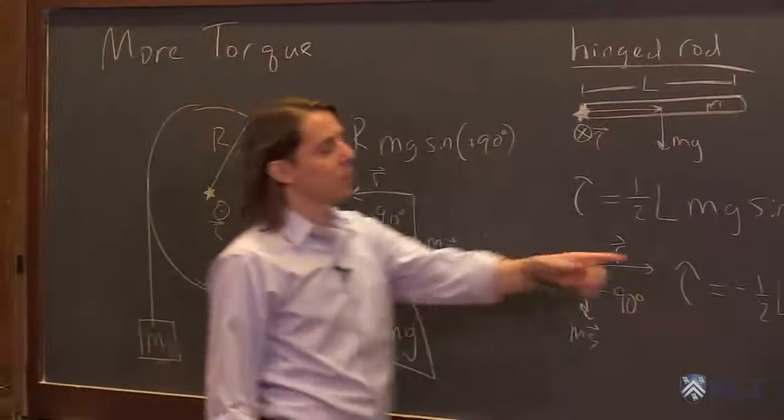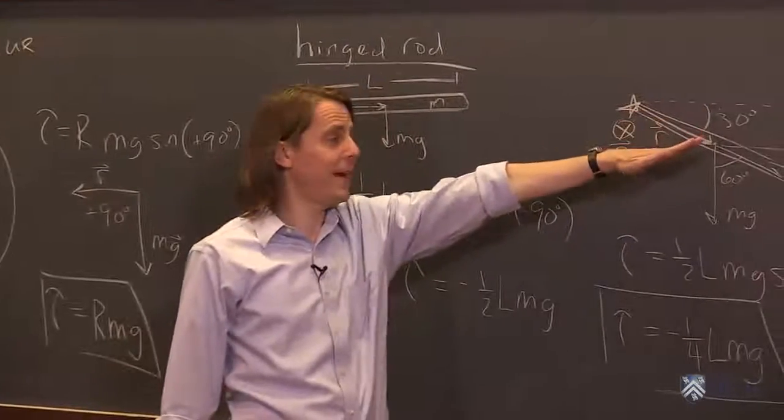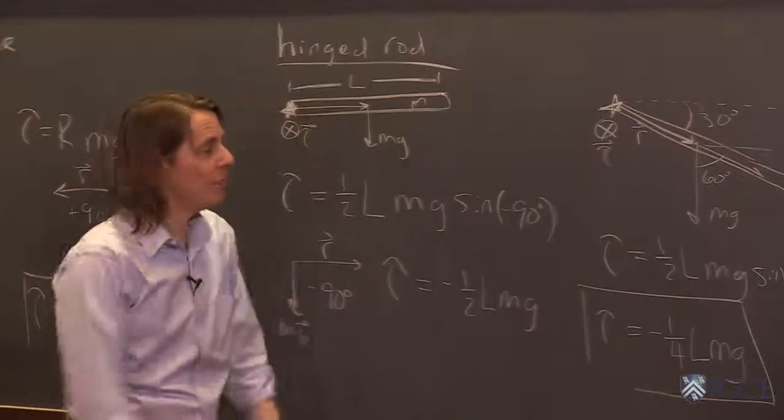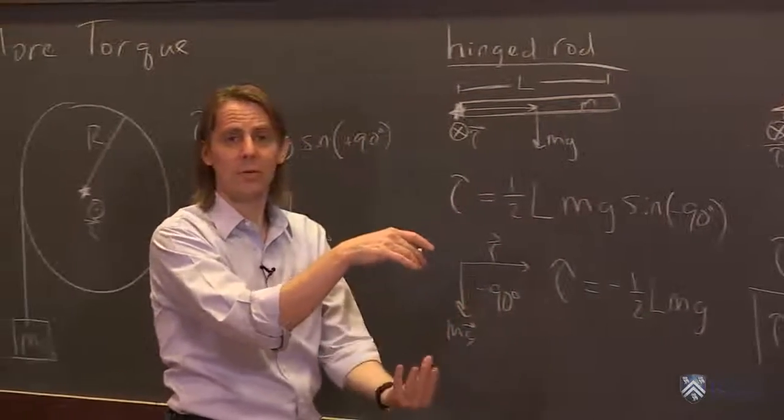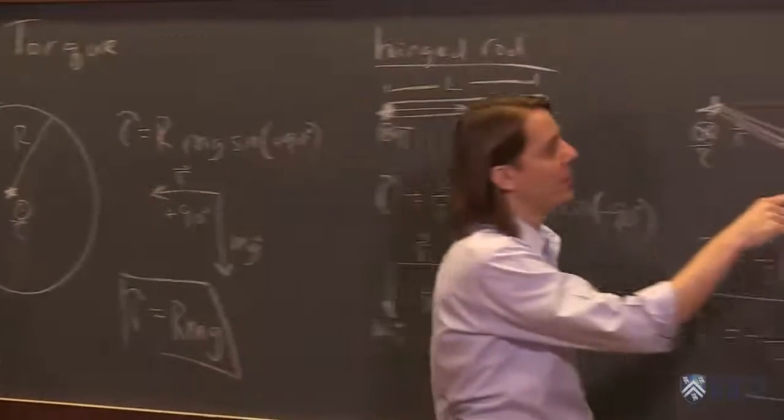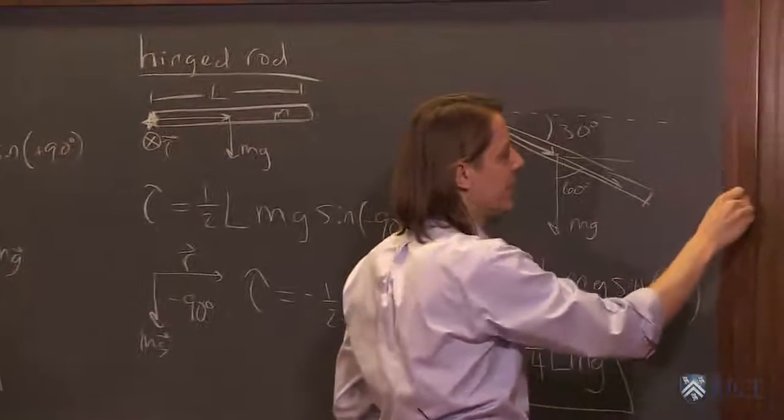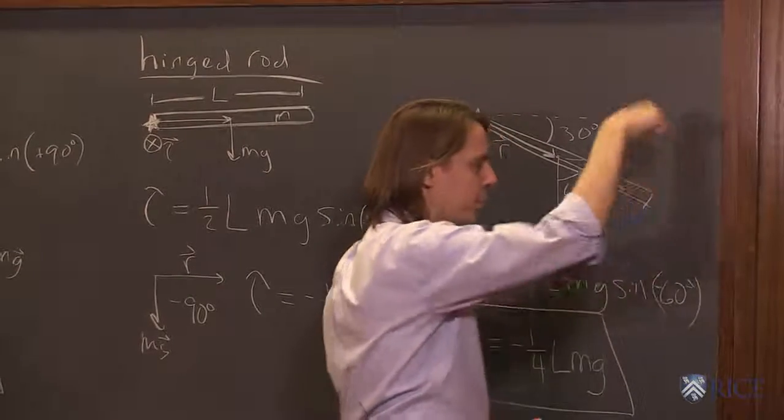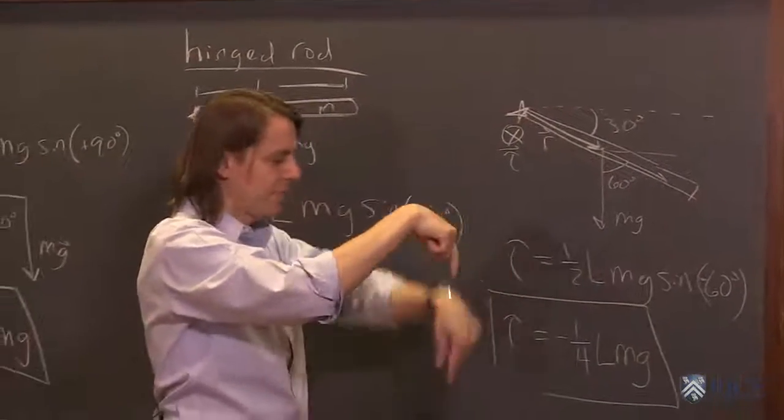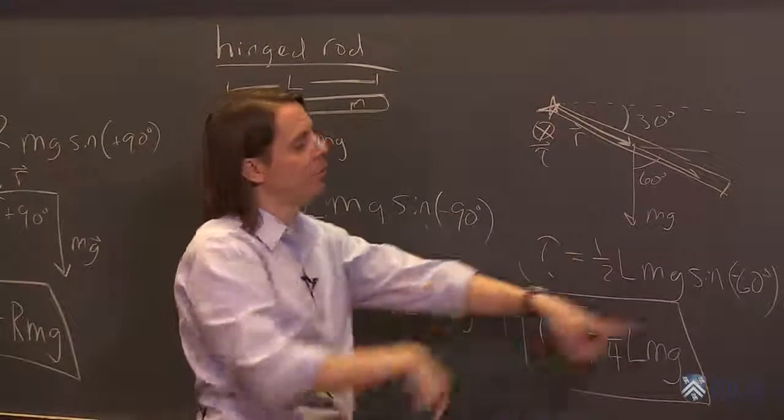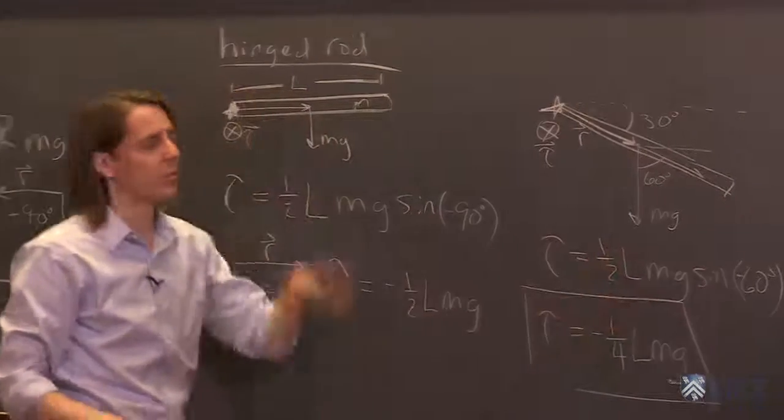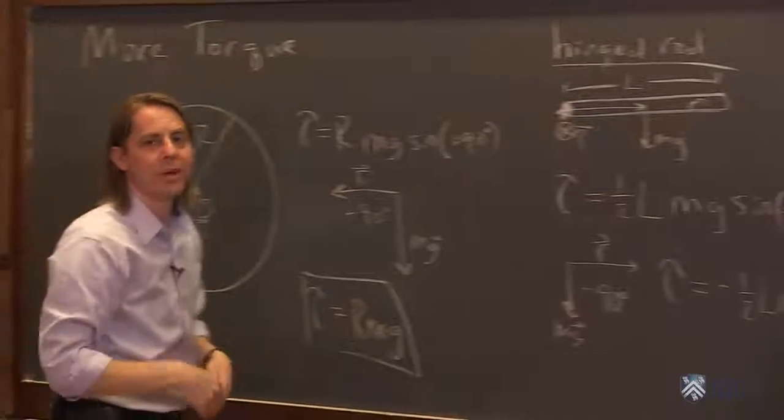So you can see the torque goes down as this thing falls. It feels a big torque when it's flat out. And as it falls, the torque goes down. When it's all the way down, the torque is 0. Because when it's hanging all the way down, straight down, the radius vector and the force vector will be parallel. And then the angle would be 0. And the sine of 0 would be 0. So the torque changes as this thing flops back and forth.